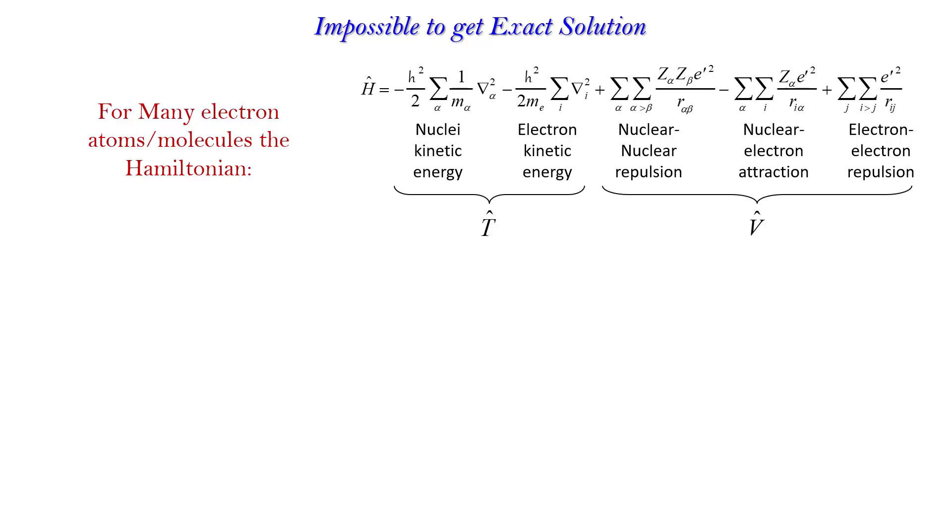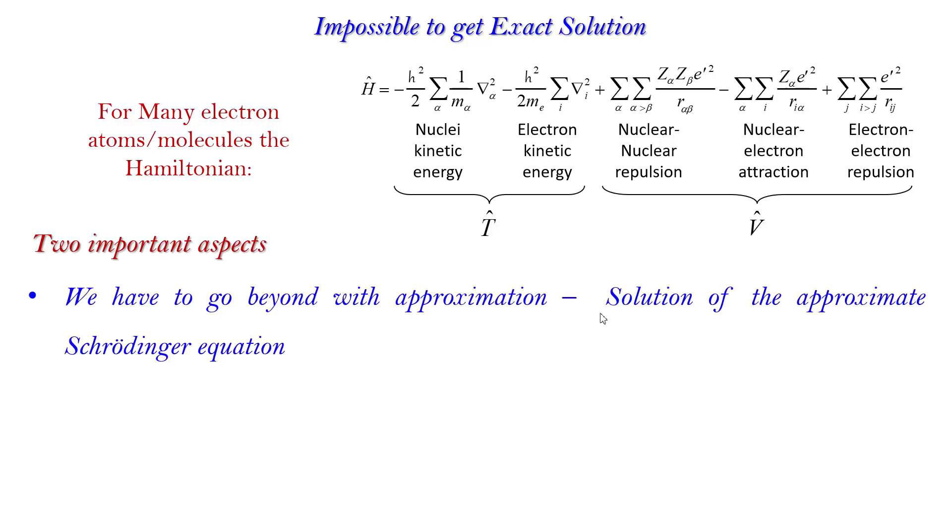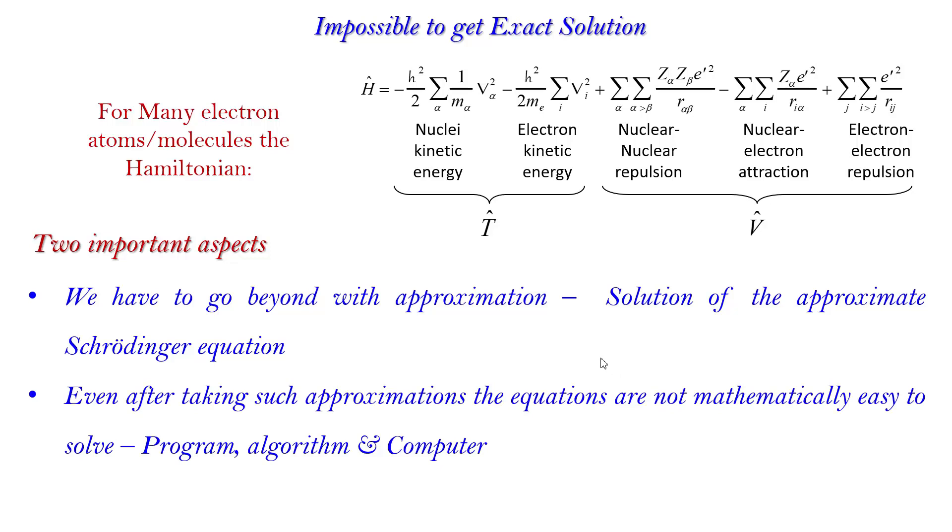Two main aspects we can get from here. One is that we have to go beyond with approximation, that we will solve the approximate Schrödinger equations. Next, even after such approximations, still these equations are mathematically too complicated to solve. From the first point, we will get the approximate Schrödinger equations. For the second point, as we cannot solve these equations after such approximations by pen and paper...